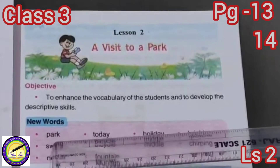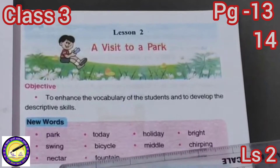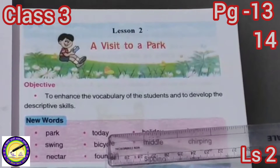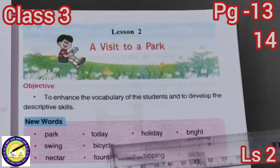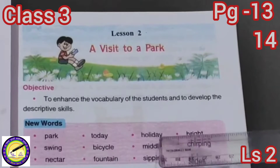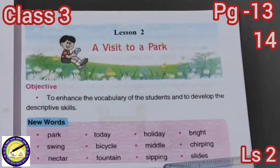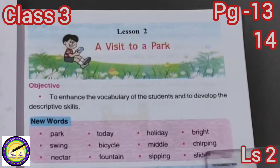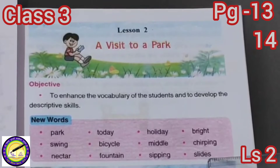New words: Park — yani baag. Swing — yani chula. Nectar — fulla da ras. Today — aj. Bicycle — cycle, jahan do panhya wali cycle. Fountain — fuhara. Holiday — chutti. Middle — vichkar. Sipping — peena. Bright — chamakdar. Chirping — panchiya da cheh chahana. Slides — fisal patiya.